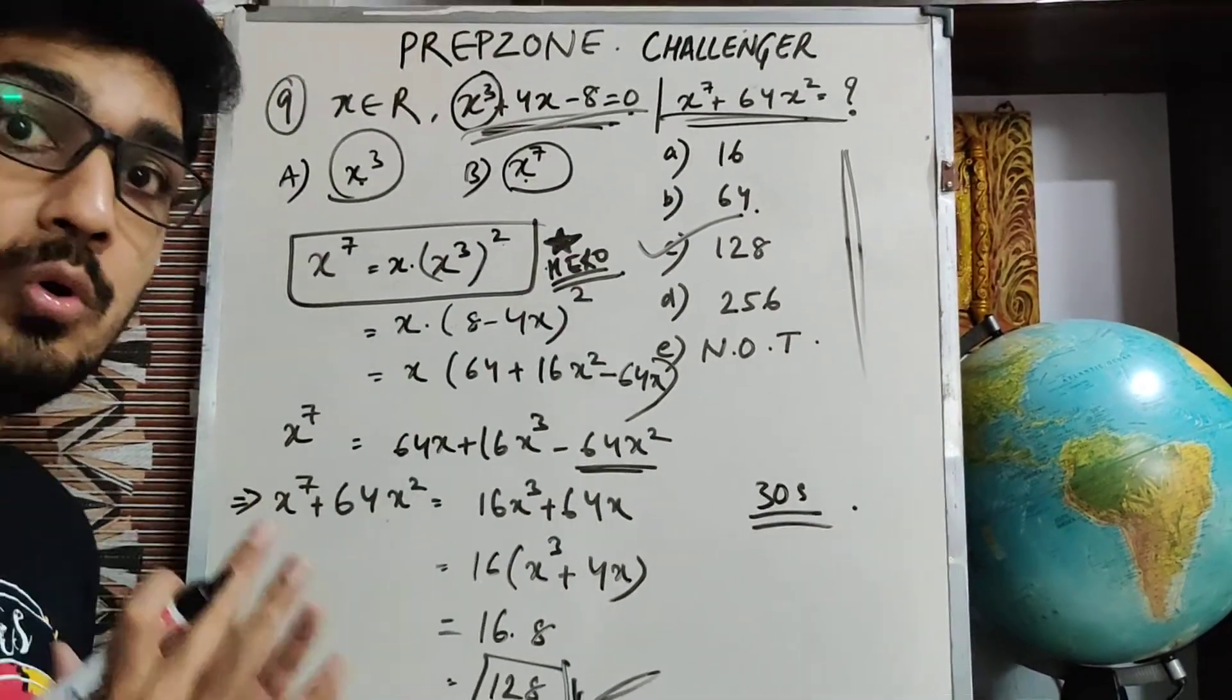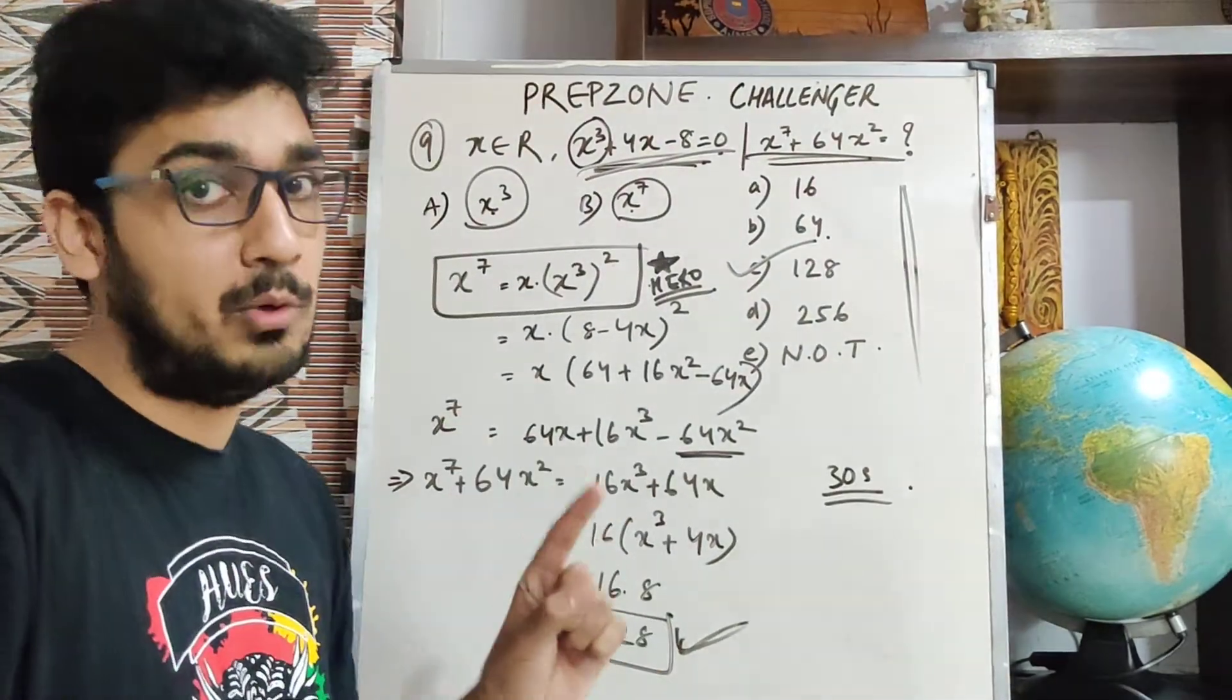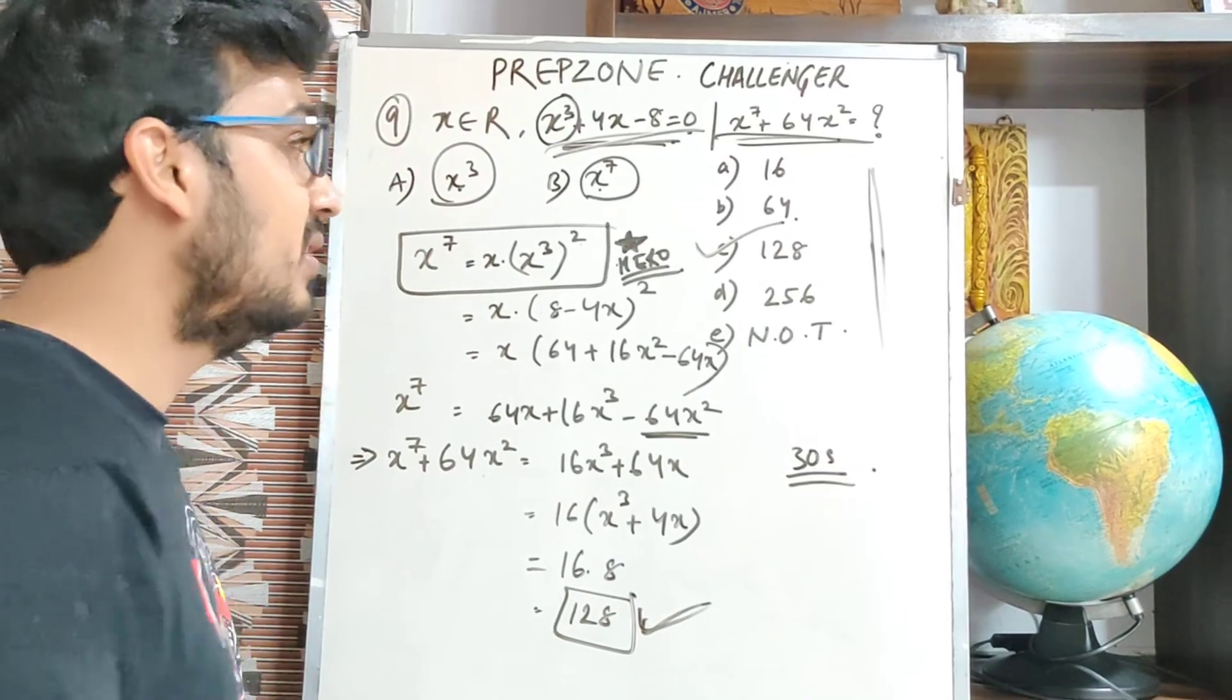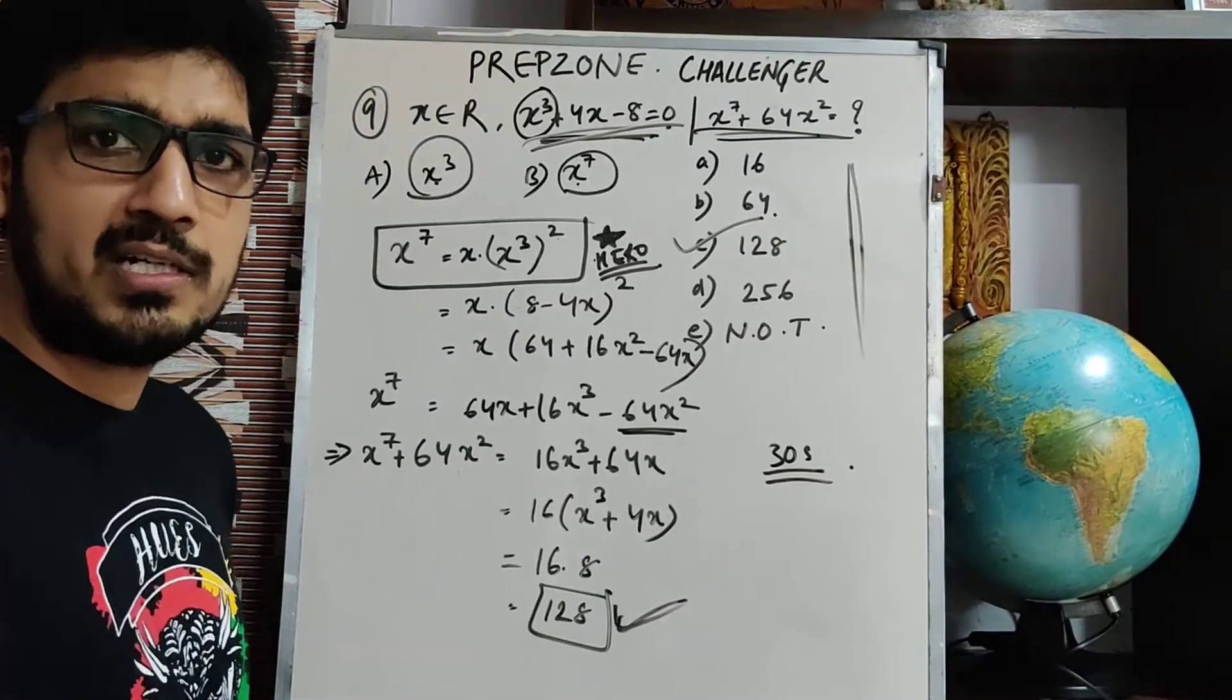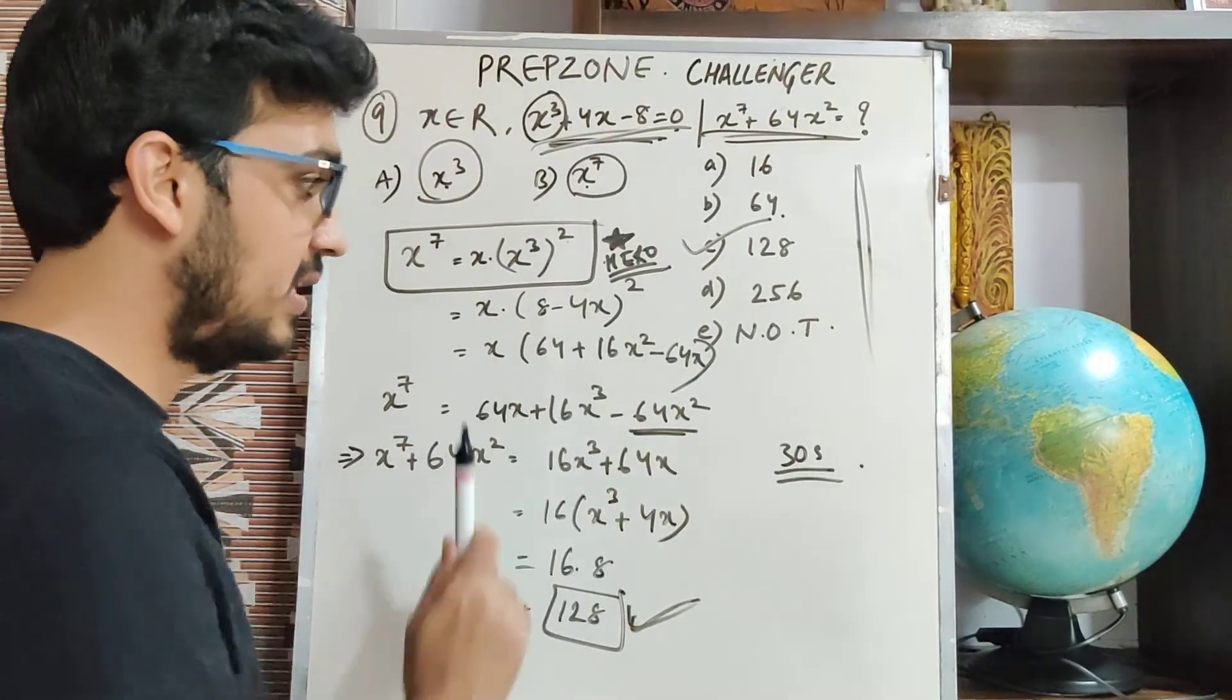Then I have simply simplified it and solved it very easily. So if you see, this was solvable within 30 seconds if you know how to deduce. And this method will be applicable to all the questions where such things are asked. This is a very important concept for CAT. So you can also note it down in your notebooks.